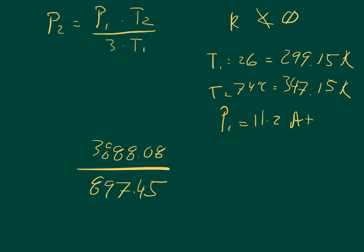And so the units on top are going to be atmospheres Kelvin. The units on bottom are simply going to be Kelvin. The Kelvins cancel out. And when we divide this thing out, it's going to give us a pressure of 4.332 atmospheres. And so that is the answer for question 10.